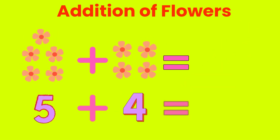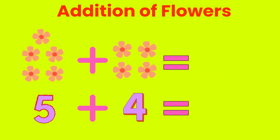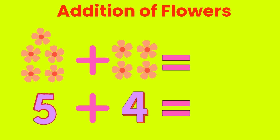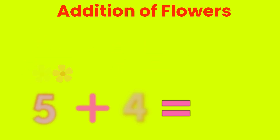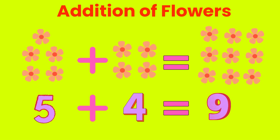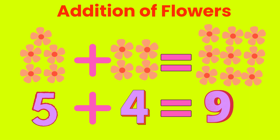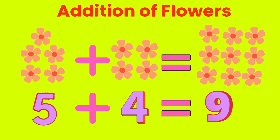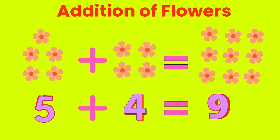Let's do addition of flowers. 5 flowers plus 4 flowers. Add 5 plus 4. Answer is... 5 flowers plus 4 flowers. Total is 9 flowers. 5 plus 4 is 9.